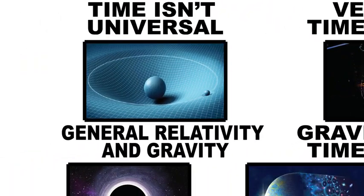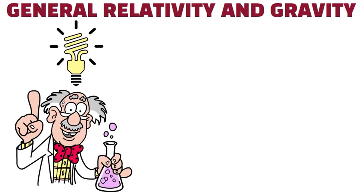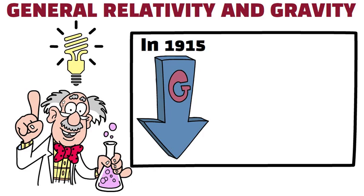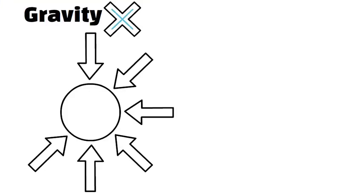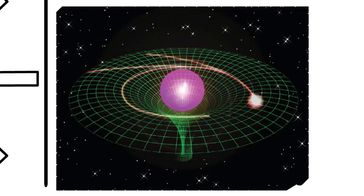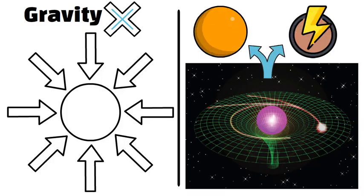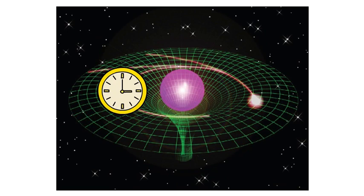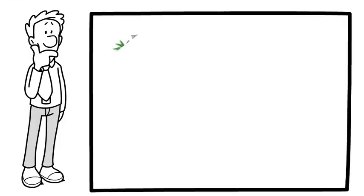General Relativity and Gravity. Einstein expanded his ideas to include gravity in 1915 with the theory of general relativity. Here, gravity isn't a force pulling objects together. It's the curvature of space-time caused by mass and energy. To see this, think of Earth.